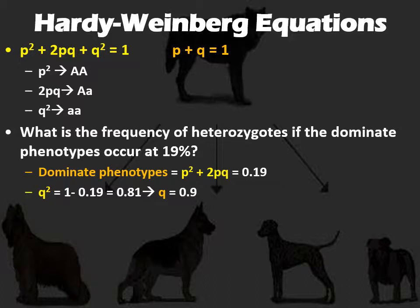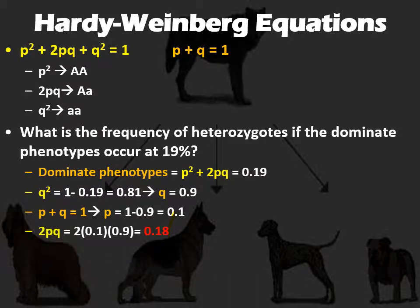Now that we have P and Q, we put them into the heterozygotes formula: 2PQ = 2 × 0.9 × 0.1 = 0.18, which is 18%. So if 19% of the population shows a dominant trait, and 81% is all recessive, there must be a good number of heterozygotes — about 18% of that population expressing the dominant trait. This logically makes sense: if most individuals show recessive traits, you'd expect a lot of heterozygotes to be produced in that population.